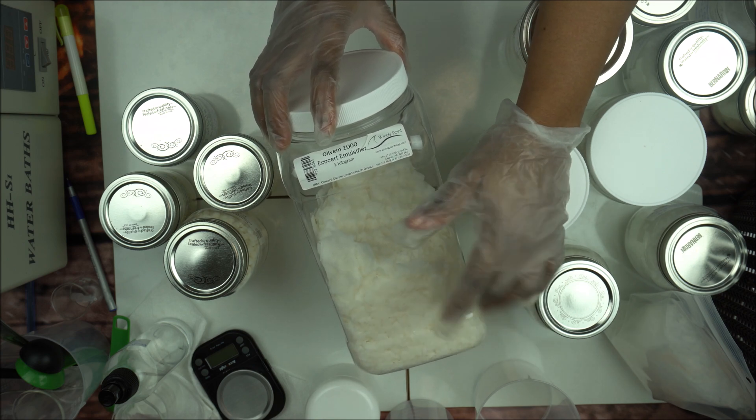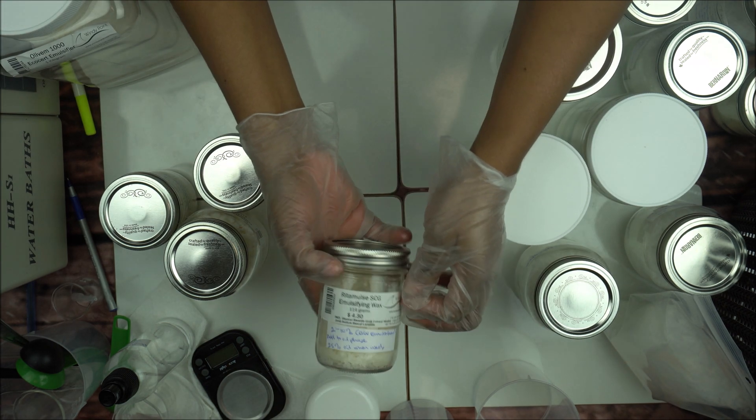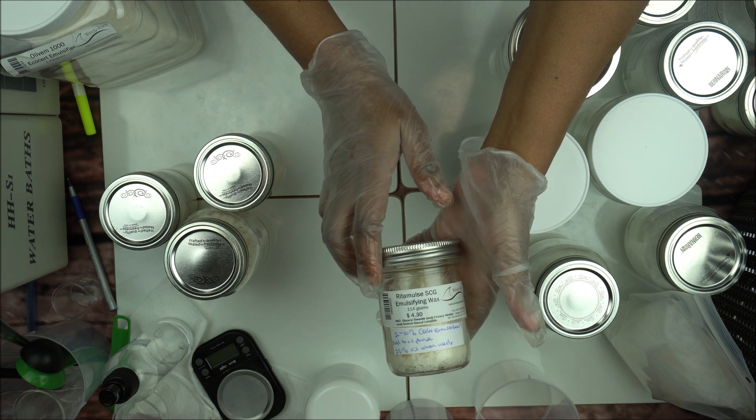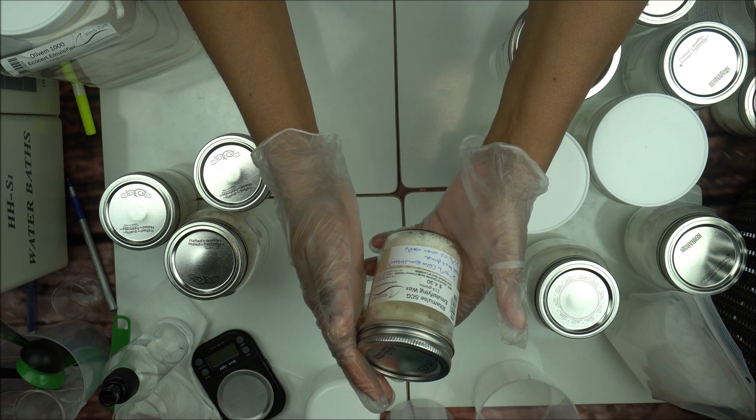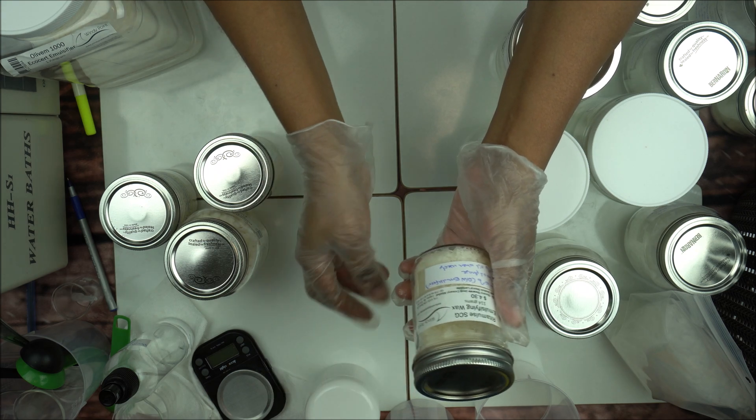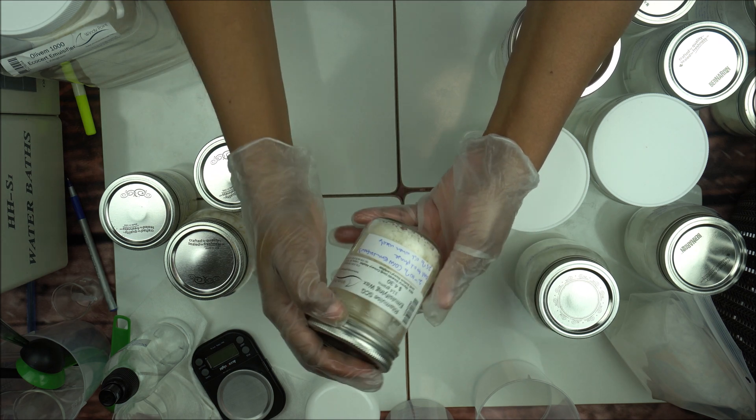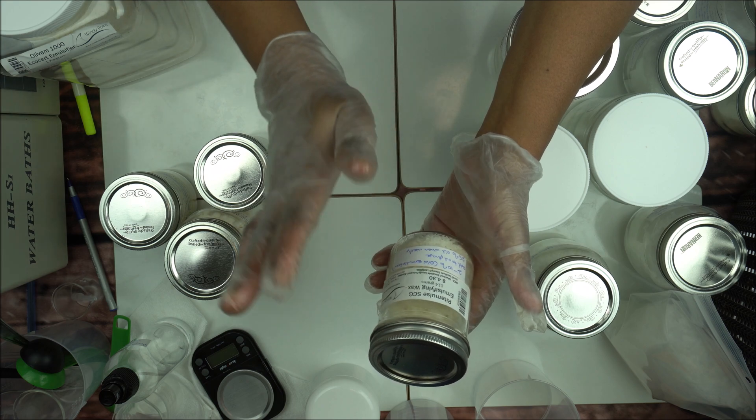Another very good emulsifier is Ritamulse SCG. Ritamulse SCG is a very good emulsifier that makes very beautiful lotion. It makes a very fluffy lotion cream. It's a very good emulsifier, you just have to know how to use it, you have to know the percentage to use.